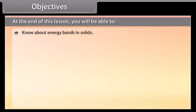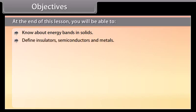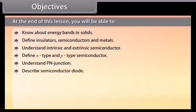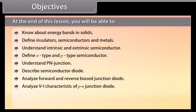Objectives: At the end of this lesson, you will be able to know about energy bands in solids; define insulators, semiconductors and metals; understand intrinsic and extrinsic semiconductors; define N-type and P-type semiconductors; understand P-N junction; describe semiconductor diode; analyze forward and reverse biased junction diode; analyze V-I characteristics of P-N junction diode; define rectifier; and explain Zener diode.